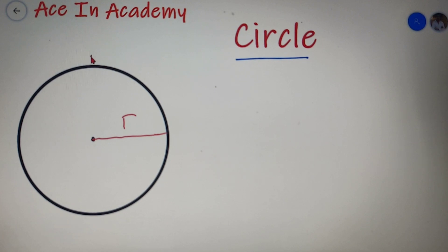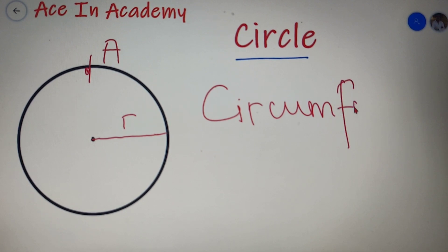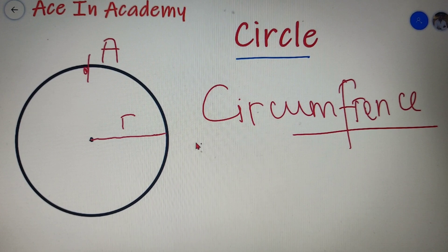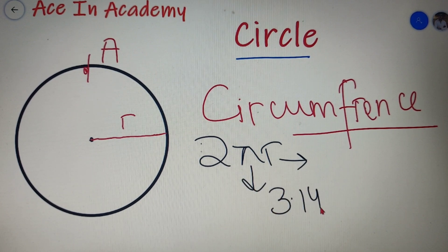If you take a point A on the circle and start moving from this point, take a complete round around the circle and come back to this point, then the total distance you have traveled is called as the circumference of the circle. The value of the circumference of a circle is equal to 2πR, where R is the radius of the circle and π has the value of 3.14 or 22/7.